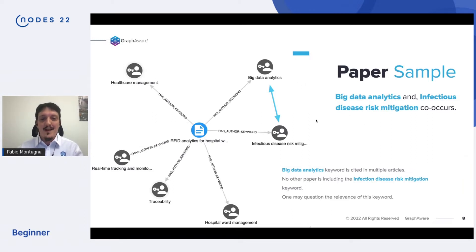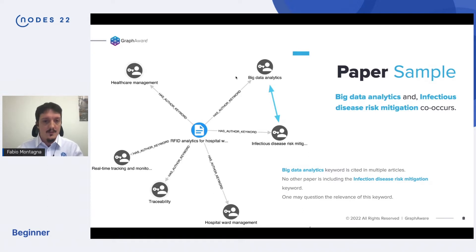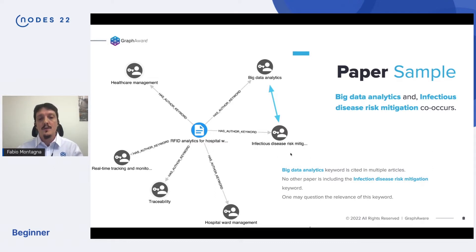Let's get concrete. In this example, we have a couple of topics that are relevant together because at least one paper is trying to do risk mitigation using big data analytics. But while big data analytics has many other papers mentioning it — for infection, disease, risk mitigation — this is the only one paper we get in the whole dataset mentioning it. So the question is: are they really relevant together or not?